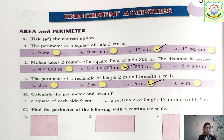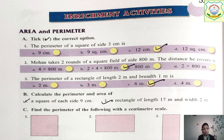Now question B: calculate the perimeter and area. You have to find the area and perimeter of a square, and also the perimeter and area of a rectangle.